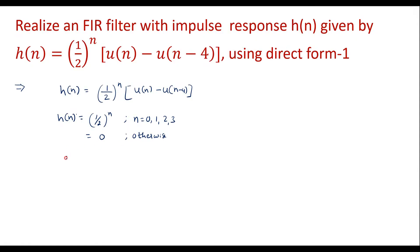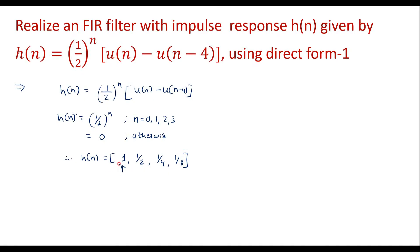Therefore, I can write the values of h(n): for n = 0, anything to the power 0 is 1. For n = 1, the value is 1/2. For n = 2, the value is 1/4. And for n = 3, the value is 1/8. So this is the h(n) sequence.